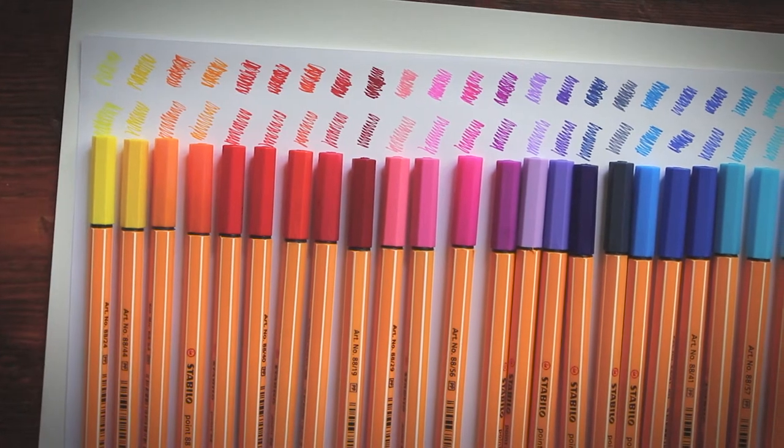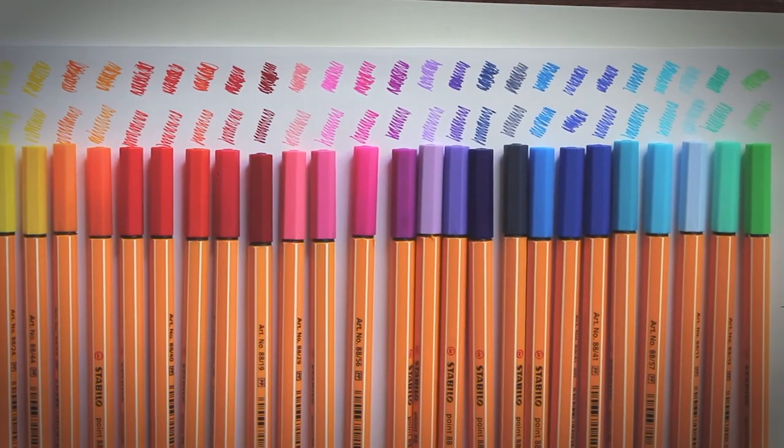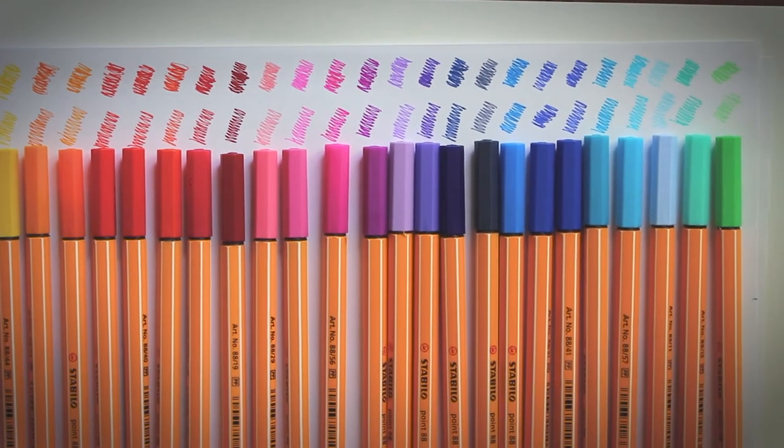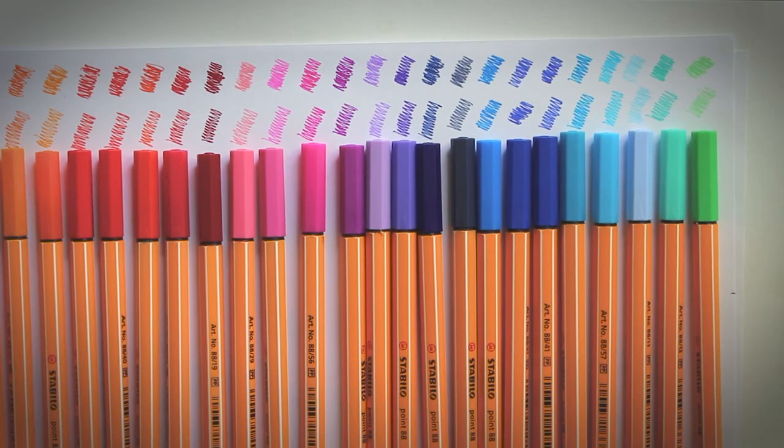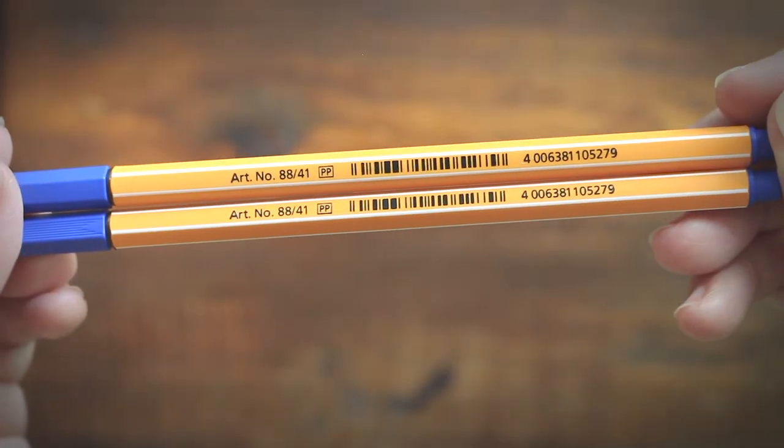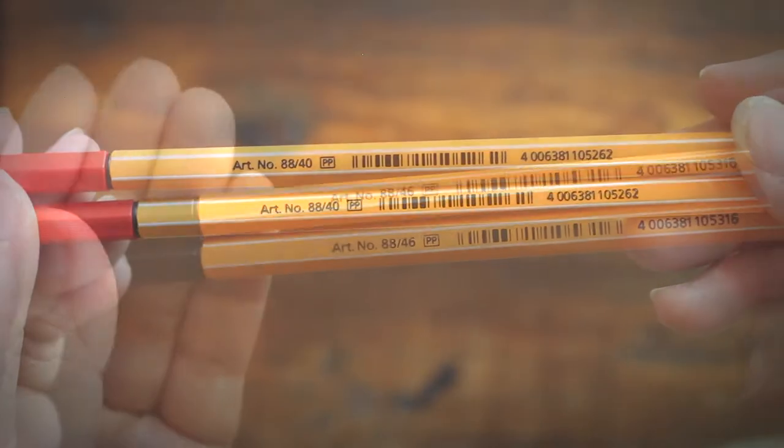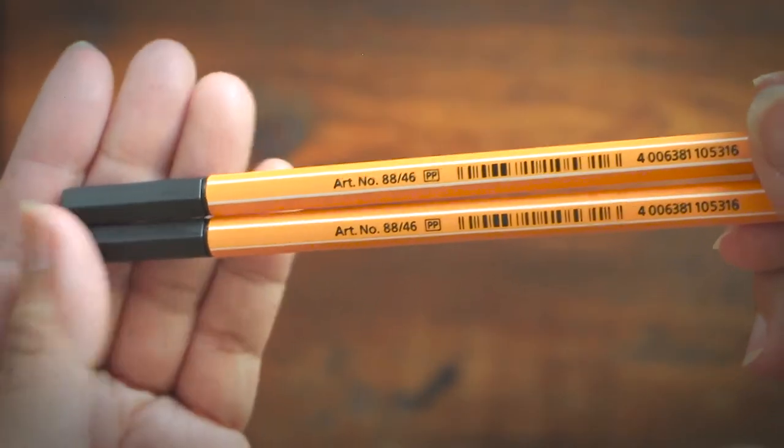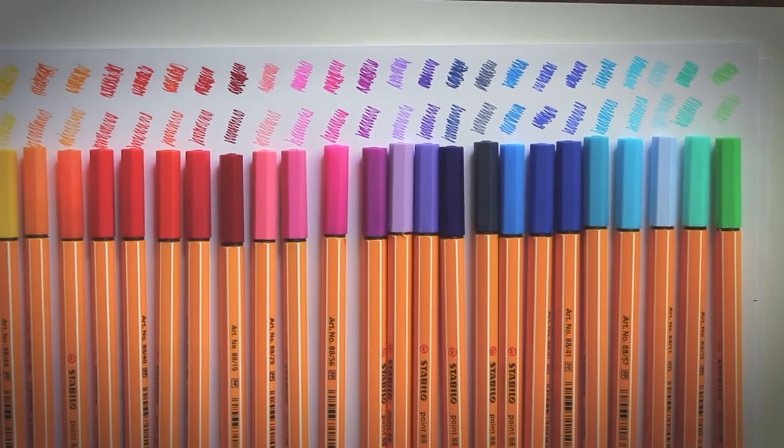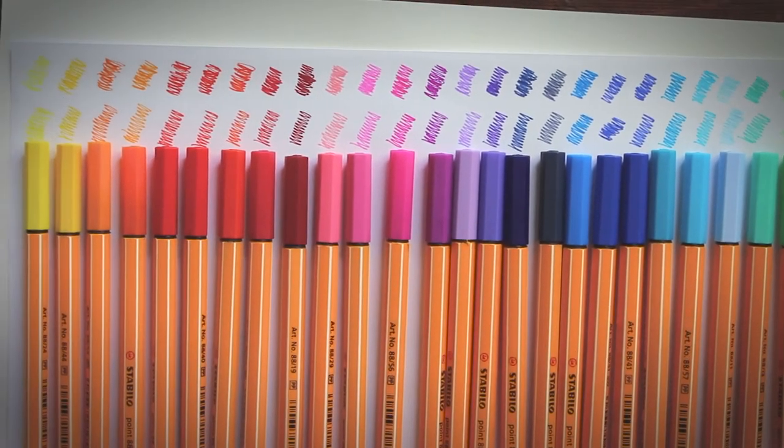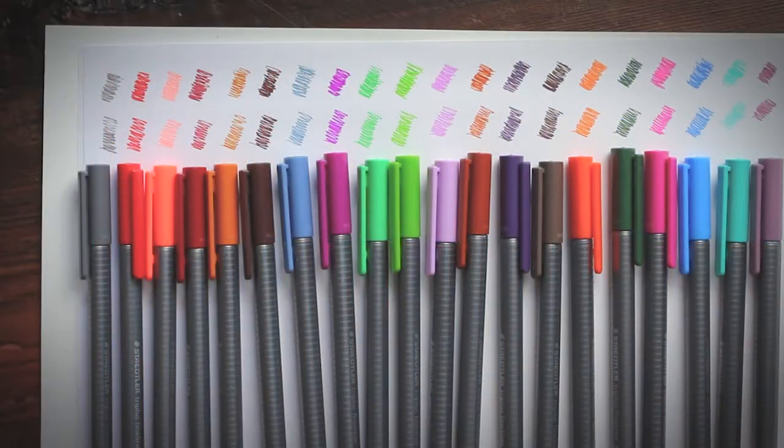While making this swatch, I noticed that some of the Stabilo colors also look so identical and upon closer inspection of the numeric color codes on the barrels, I found out that I actually received doubles of three colors. Like see here, I got two of the blues, two of the reds, and two blacks. Now what's up with that, right? So I contacted Stabilo to ask if this was normal or if there was in fact a quality control breach here. And I found out that the duplicates were intentional.